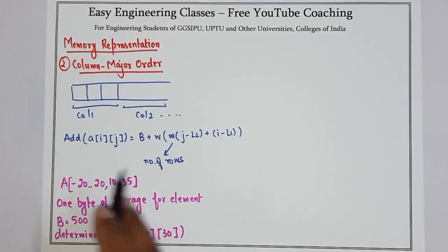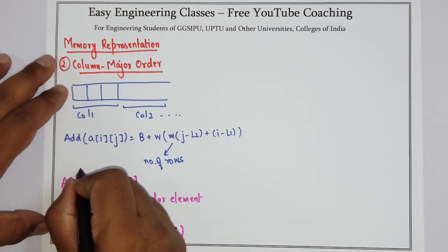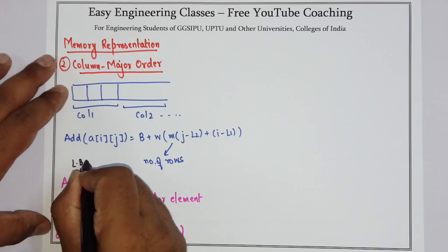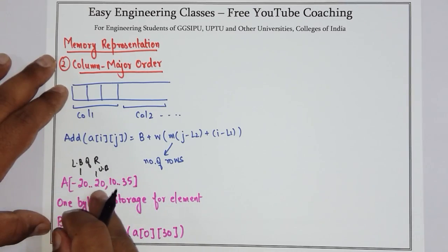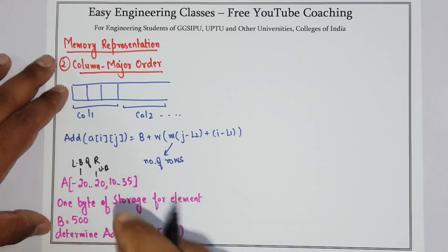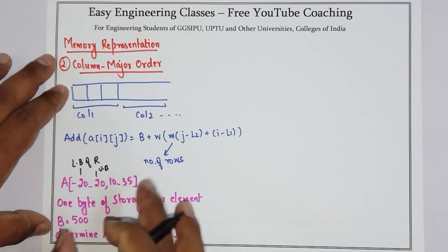An array is given with lower bound of row is -20, upper bound is 20. And for column, lower is 10 and upper is 35. So first I will calculate the number of rows.